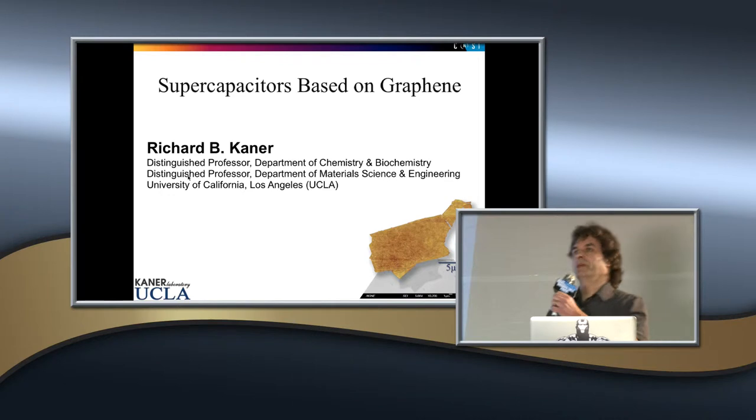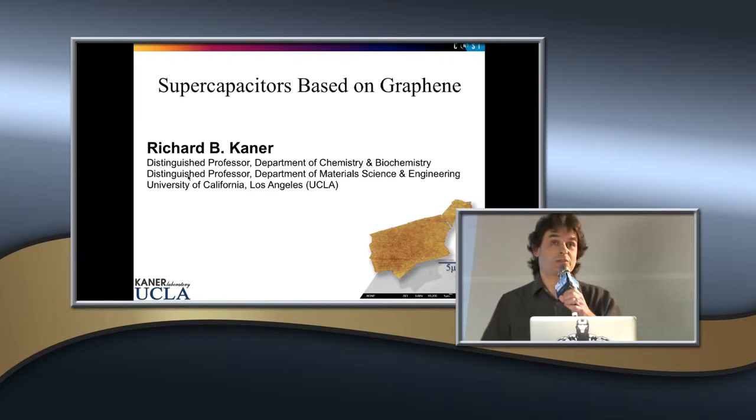Thank you. It's a pleasure to be here. I want to start off, I need to introduce what graphene is. Graphene is a single layer of carbon. It's the lightest and strongest material ever discovered. It was discovered by Novoselov and Geim in 2004. They shared the Nobel Prize in Physics in 2010.